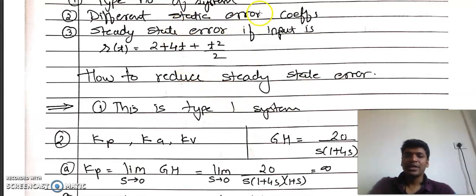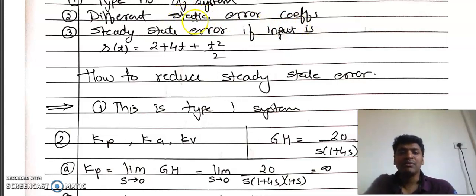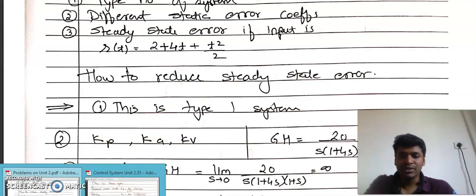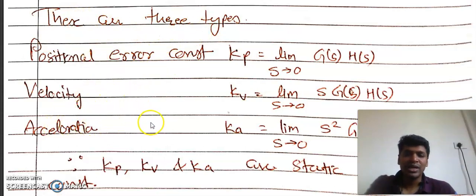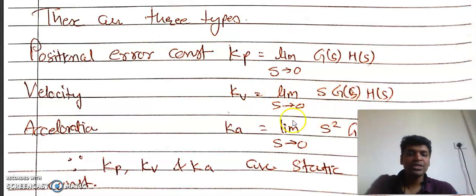The second question is: what are the different static error coefficients? We need to find the value of Kp, Kv, and Ka. There are three types: positional error constant Kp, velocity error constant Kv, and acceleration error constant Ka. Kp = lim(s→0) G·H; Kv = lim(s→0) s·G·H; Ka = lim(s→0) s²·G·H.